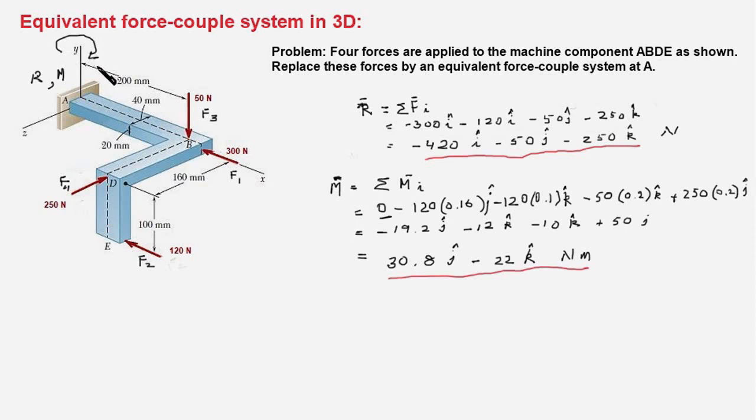And as per right-hand rule, this would mean moment in this direction. And the moment arm for this force would be this distance, which is 160 mm or 0.16 meters. So, the second term is 120 times 0.16. And the minus sign is because it's pointing towards minus Y direction.